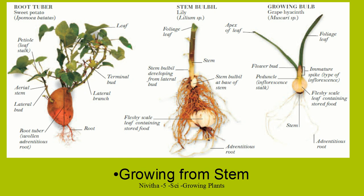A flower bud is at the apex. A foliage leaf is the one which takes care of photosynthesis and production of oxygen and food. This is a fleshy scale leaf containing stored food — onion and garlic are a type of bulb. And then you have tubers. Earlier we have seen how a new plant grows from the seed.